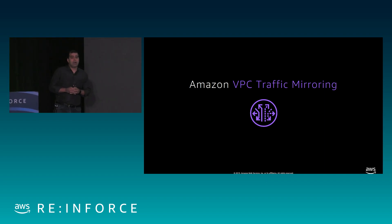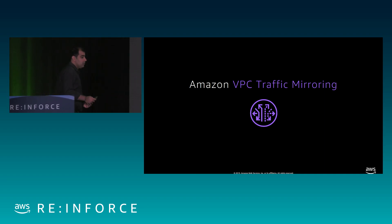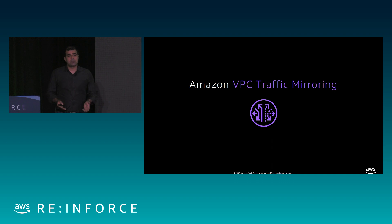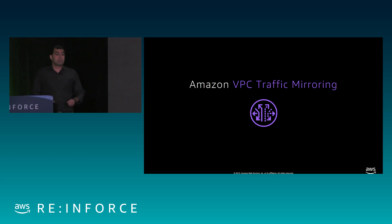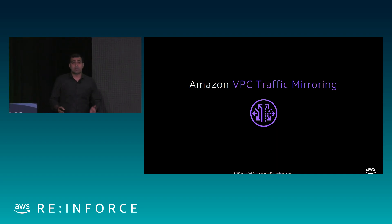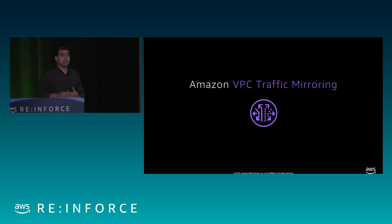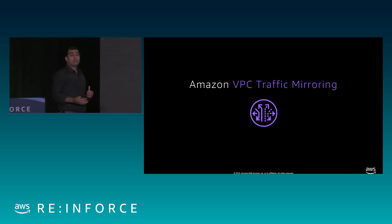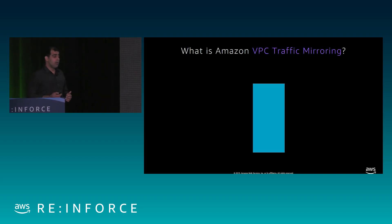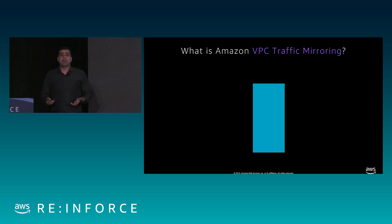Yesterday we launched a feature called traffic mirroring. It's a VPC feature you can use to monitor your VPC infrastructure traffic with any monitoring or security appliance of your choice — for use cases like content inspection and threat detection. It lets you do deep packet inspection and look at the full traffic including the payload. Really, VPC traffic mirroring is a fiber tap in the cloud.